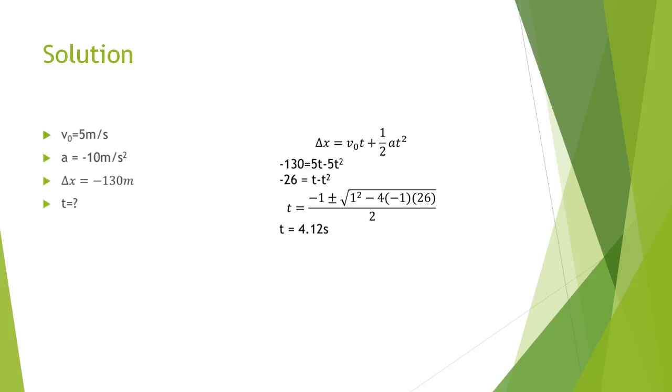And then you would know that the building is 130 meters, but because our question is when does it reach the ground and you know that the distance should be displaying downwards, your delta x would be negative so it's minus 130 meters.